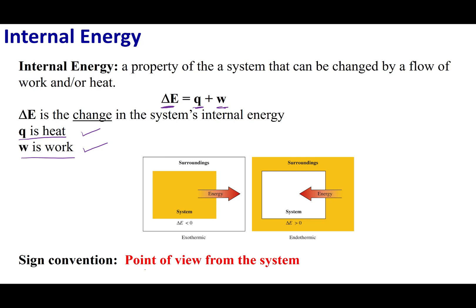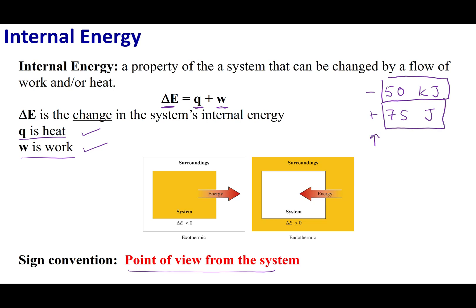Chemists take the point of view of the system. Thermodynamic values consist of a sign, a number, and a unit. The numerical value and the unit tell you the magnitude of energy being exchanged; the sign tells you the direction in which that energy is flowing. If energy is flowing out of my system, I am going to lose internal energy — that means my ΔE is going to be less than zero, or in other words, it's going to be a negative number.